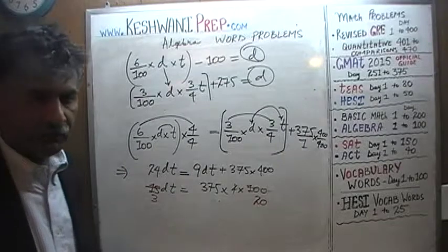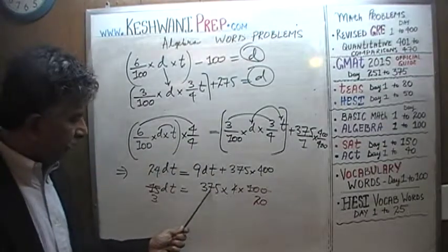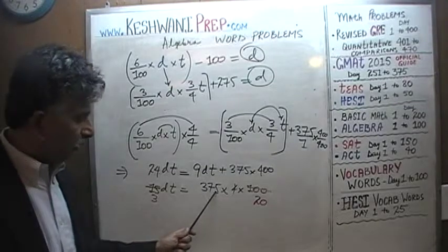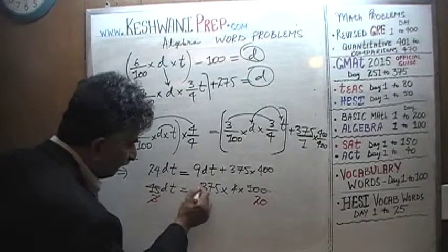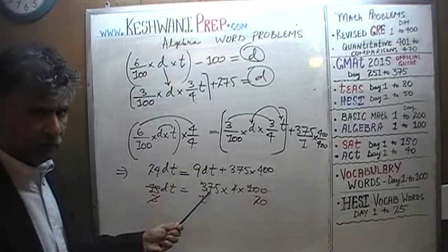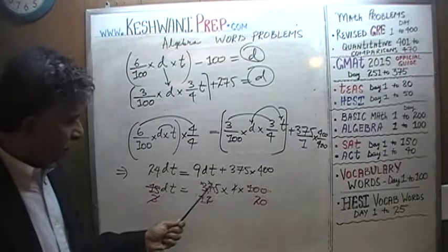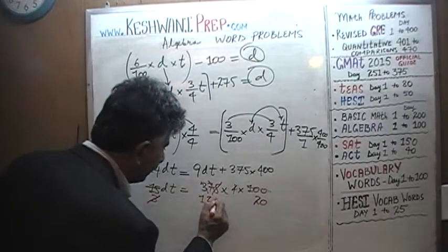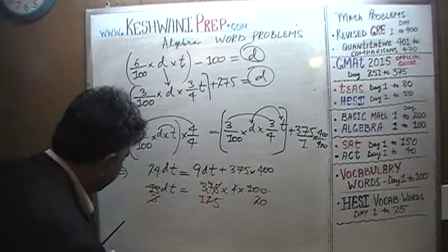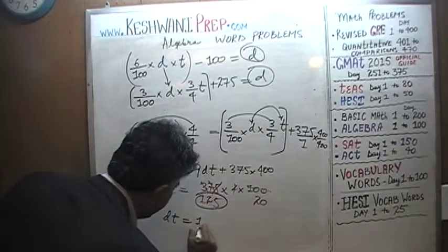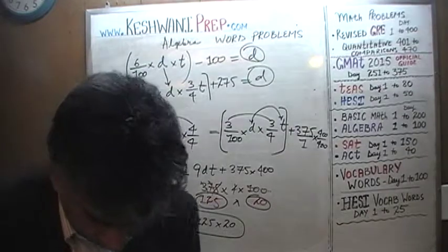Dividing both sides by 3: the 3 drops out, 375 divided by 3 is 125. So D times T equals 125 times 20 times 4. This is what we extract from all of this. Now we go back and substitute DT into one of our original equations to solve for D.